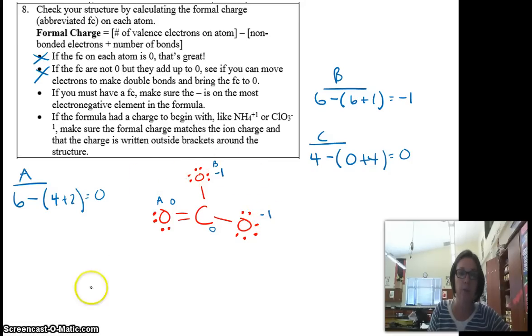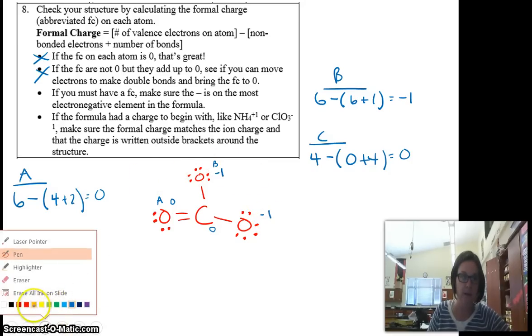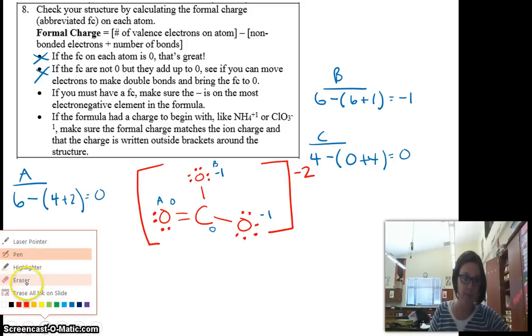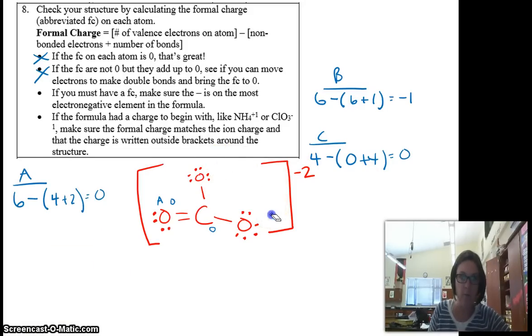So then what we would do is we would put brackets around the whole formula. And we would write that charge on the outside of the bracket. So there's negative 2 right there. So all this blue stuff, we could get rid of. We wouldn't have to put where the formal charge is. Sometimes people ask you to show that. But most of the time, they just want you to show that the entire structure in brackets has a negative 2 charge.